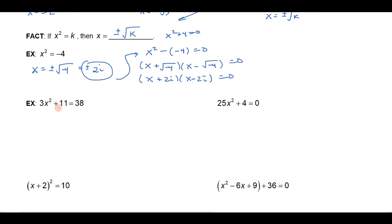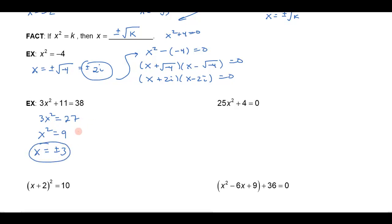This gives us a new way to solve a quadratic equation where there's no middle term. For example: 3x squared plus 11 equals 38. Rather than getting everything on one side and factoring, I can get x squared all by itself. Subtract 11 from both sides and divide both sides by 3, and fast as lightning I see x is just plus or minus 3. If we recognize there's no middle term, this is a really fast way of solving a quadratic equation.